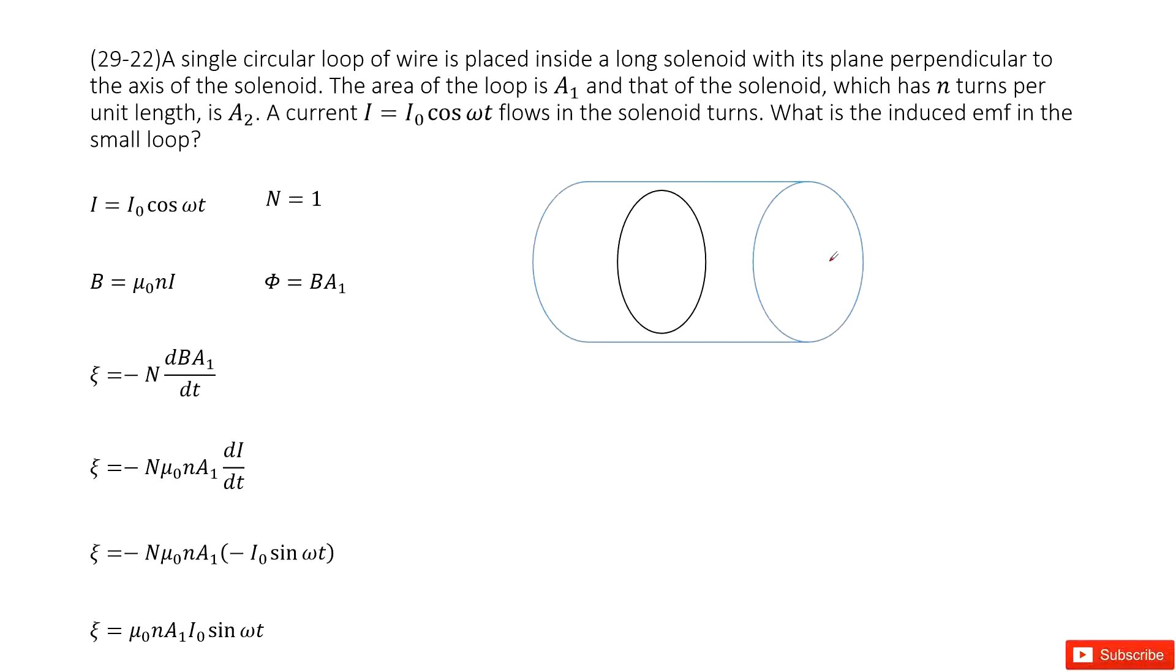It's this plane perpendicular to the axis of solenoid. And then we know the A₁ of the loop and the n-turns of the solenoid and A₂ of the solenoid. So this is A₂. This is A₁.